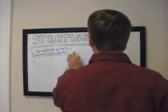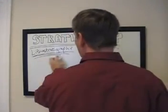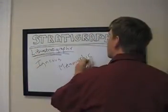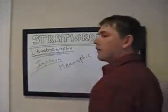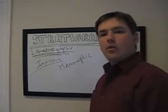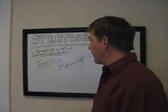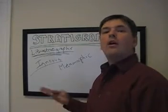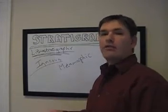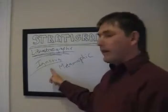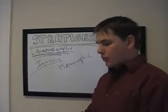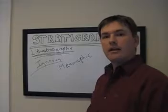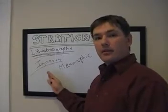Then we have the other two rock types, which are fairly common but not as common as sedimentary. Igneous rocks are formed directly by cooling of magma, either at the surface or underground, through a lava flow, a pyroclastic flow, or an ash flow. Granites are igneous, basalts are igneous, and ash flows are igneous — those are basic types of igneous rocks.